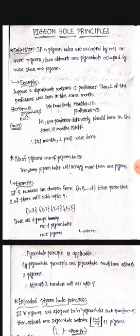That means n equals 13. So here m is less than n. Generally, we denote pigeon holes with m and pigeons with n. So here m is less than n, so one professor definitely should be born in the same 12 months. So in any one of the months, 2 professors were born. This is the pigeon hole principle.